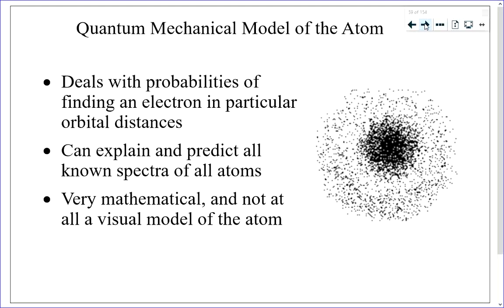The quantum mechanical model of the atom is the most complete model — it can explain all known spectra of all atoms. You need to know that it deals with probabilities of electron location, not certainties. It's very mathematical and not at all a visual model of the atom — so mathematical, in fact, that we can't even begin to look at the formulas involved in high school.